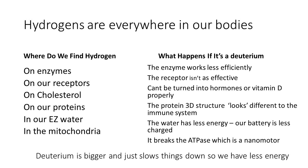Cholesterol is needed to make pregnenolone — the master sex hormone — from which all other sex hormones are made: DHEA, testosterone, estrogen, and progesterone. When cholesterol contains deuterium, the enzymes that convert it into pregnenolone get confused because the molecule doesn't look as it should. This slows down the process and results in lower sex hormones. If you persistently have low hormones and have tried various approaches, it may be worth looking at deuterium more closely, as some people are making mistakes or missing something important about it.